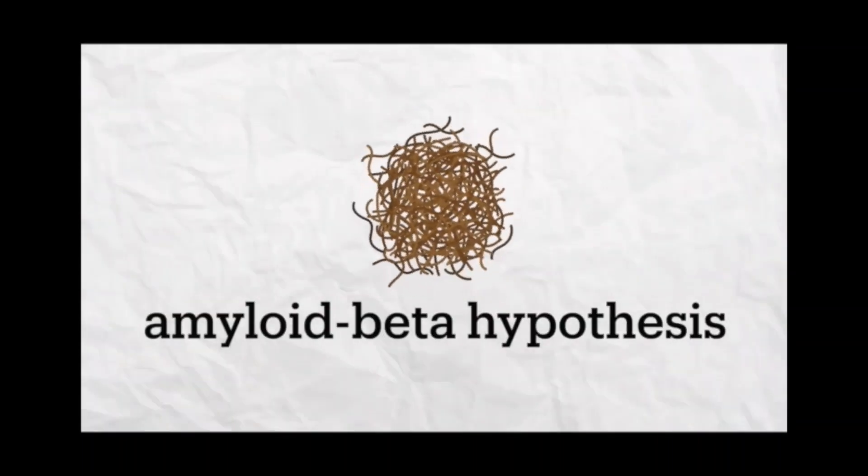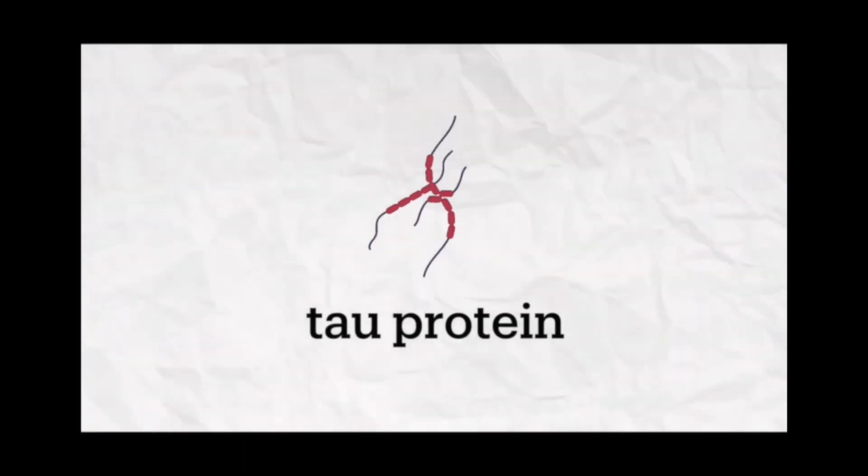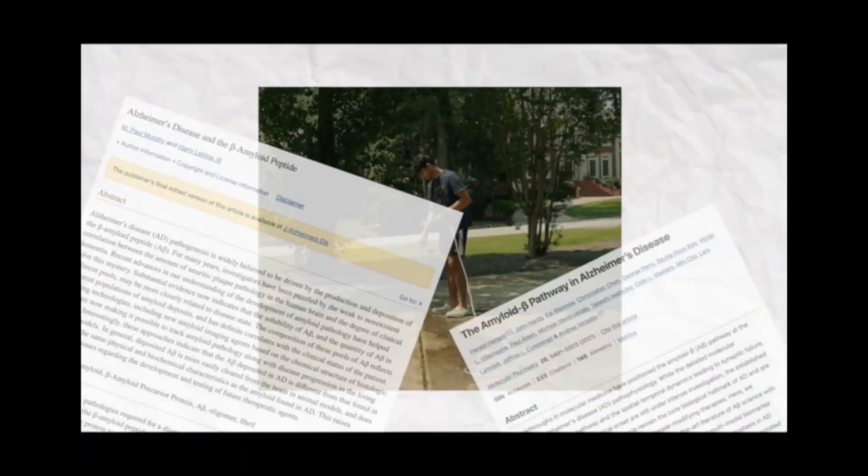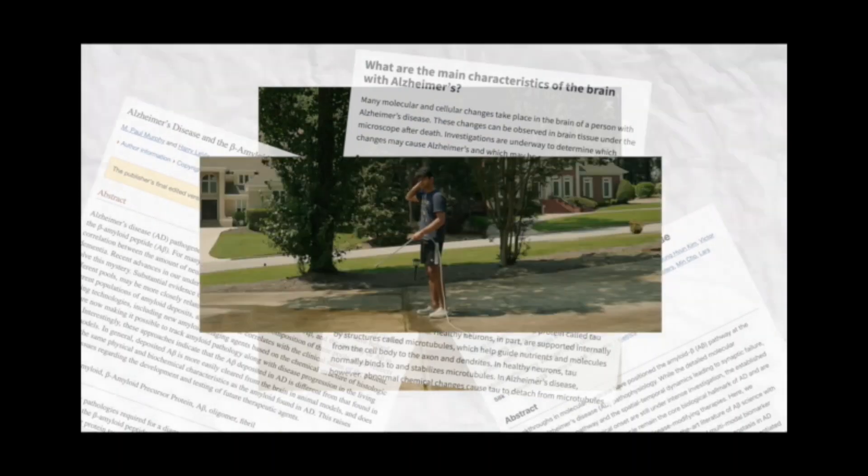According to the amyloid beta hypothesis, the clumps of amyloid beta and tau proteins can trigger neurodegenerative diseases such as Alzheimer's and even dementia if not cleared. So scientists propose that efficient sleep is essential for a healthy mind and body.